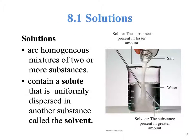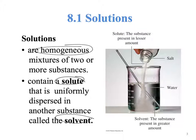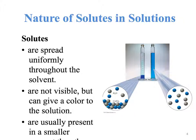What is a solution? A solution is a homogeneous mixture of two or more substances. We have two important parts in a solution: a solute and a solvent. The solute is spread throughout the solvent. The solute is not visible, even though it could give some color to the solution. The solvent is present in the largest amount.